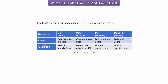Using slash users slash 123 with GET returns a specific user. Using that URI with POST should return method not allowed. Using it with PUT updates that specific user. And using it with DELETE deletes that specific user.